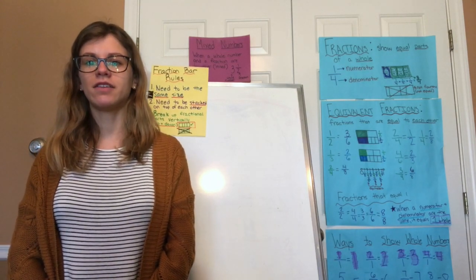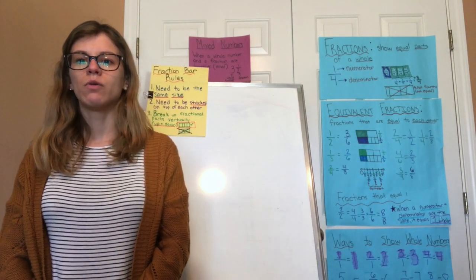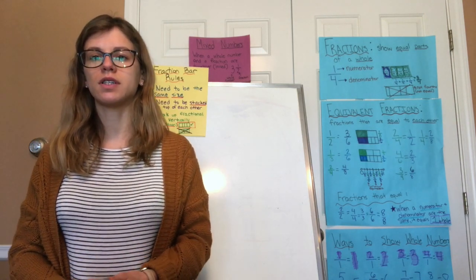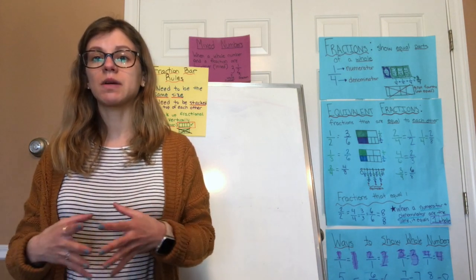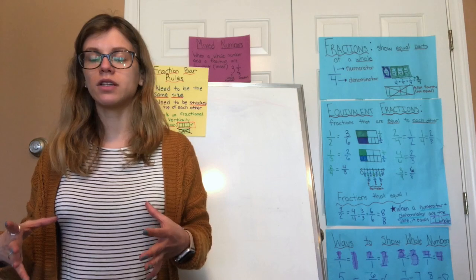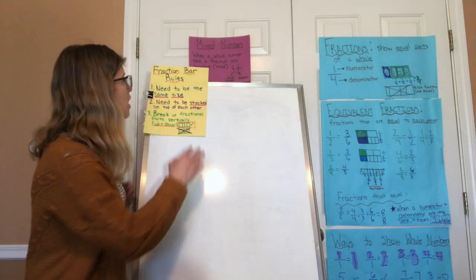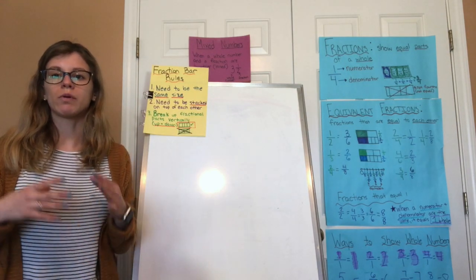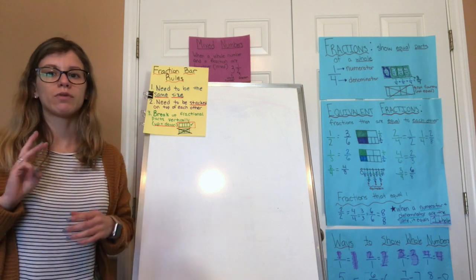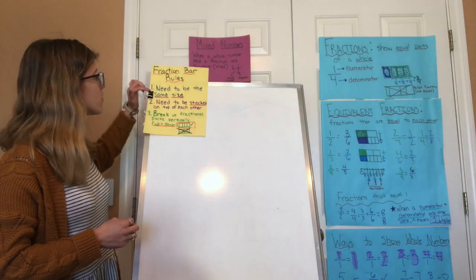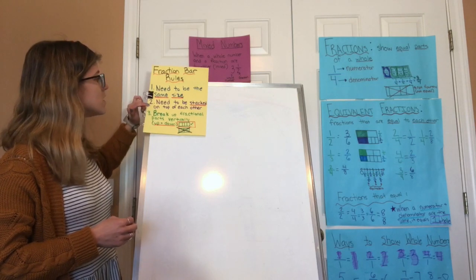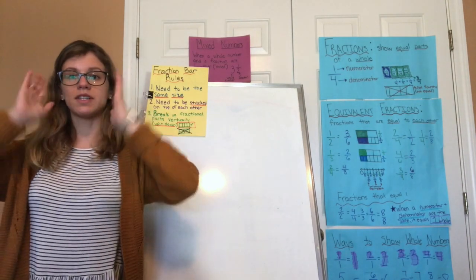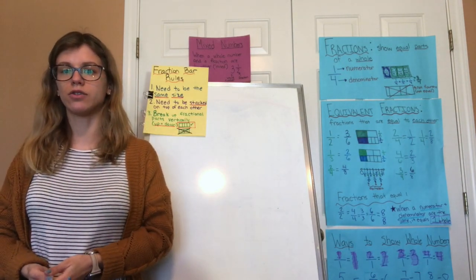Welcome to day 16 of online learning. Yesterday we worked on equivalent fractions — fractions with different numerators and denominators that are equal and make up the same amount of the whole. We practiced using our fraction bars to compare these equivalent fractions, following three rules: they need to be the same size, stacked on top of each other, and broken up into fractional parts vertically — up and down — the same way.